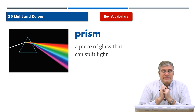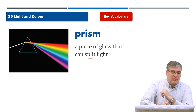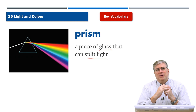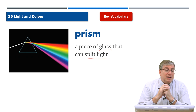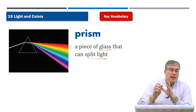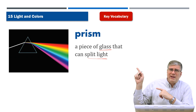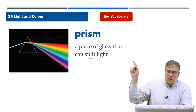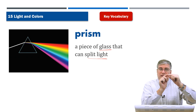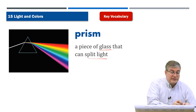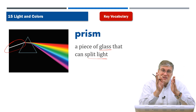Prism. A prism is a piece of glass that can split light. This looks like a Pink Floyd album cover — Pink Floyd is a very old rock and roll band, good music. Anyway, what they're showing here is interesting. Sometimes if you look on the walls on a sunny day, you see a rainbow on your wall — all these different colors. What's going on? Well, probably the sunlight is coming in through a window, hitting a piece of glass.